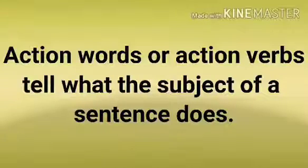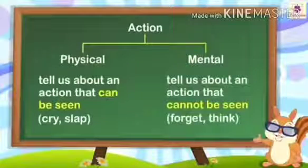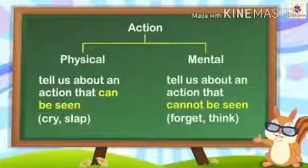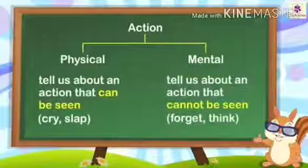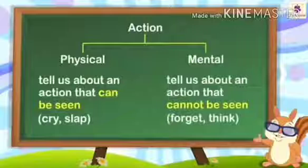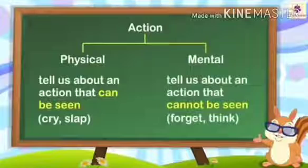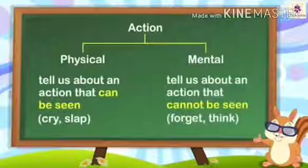Action words, or action verbs, tell us what the subject of a sentence does or what the subject is doing. Now action words are of two kinds. One, which tell us about an action that we can see — like sit, stand, cry. And the other ones tell us about an action that cannot be seen — like forget, think. We cannot see these actions, but still they are actions and action words. So action words are those which show some kind of action.